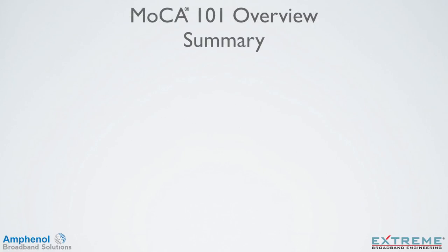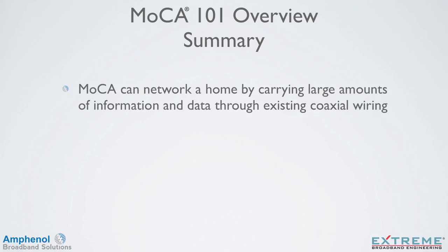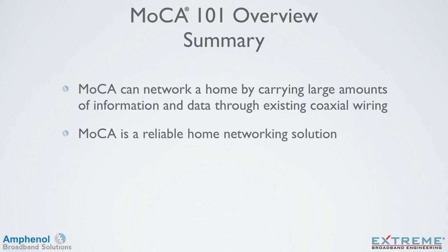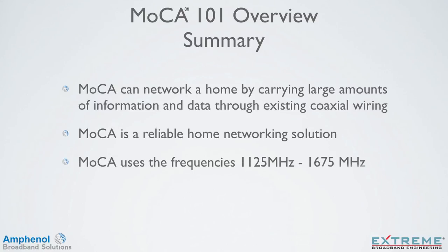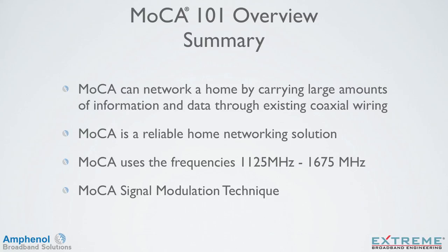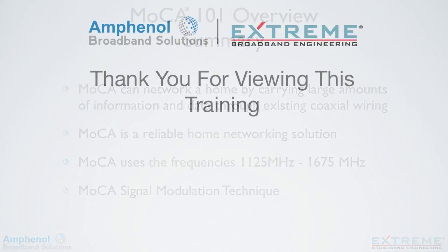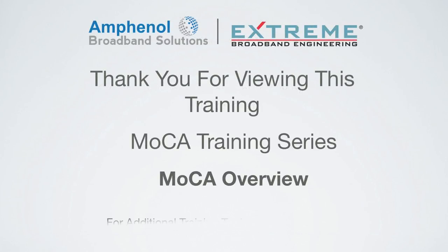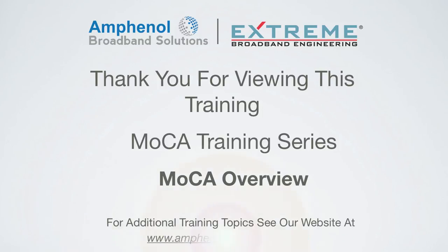Let's review what we've covered in this MOCA 101 overview. We explained that MOCA can network a home by carrying large amounts of information and data through existing coaxial wiring. MOCA is a very reliable home networking solution. MOCA uses frequencies 1125 to 1675 MHz, and we explained the MOCA signal modulation technique. Thank you for viewing this training from our MOCA training series on MOCA overview. For additional training topics, see our website at www.amphenolbroadband.com.